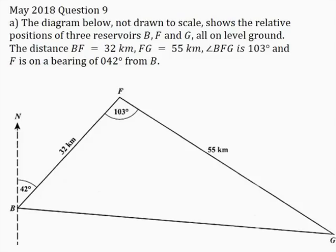In this video I will be solving May 2018, Question 9, Part A. The diagram below, not drawn to scale, shows the relative positions of three reservoirs B, F and G, all on level ground. The distance BF is equal to 32 km, FG is equal to 55 km, angle BFG is 103 degrees, and F is on a bearing of 42 degrees from B.